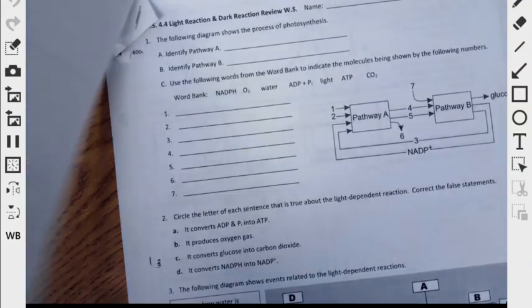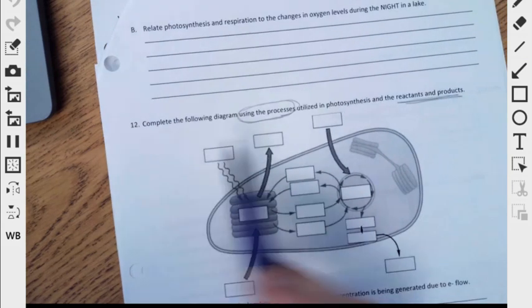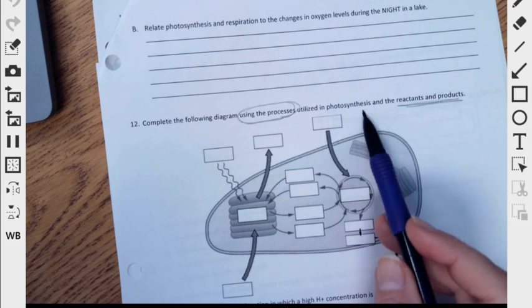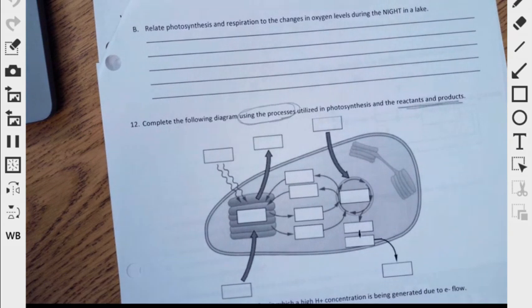Okay, so we're going to warm up with 4.4, question number 12. It says, complete the following diagram using the processes used in photosynthesis and the reactants and products. So if I say, what are the processes of photosynthesis, what should you say? Light reaction and Calvin's cycle. So where on our diagram do you think that we should be writing those? This boils down to, where does the light reaction happen?